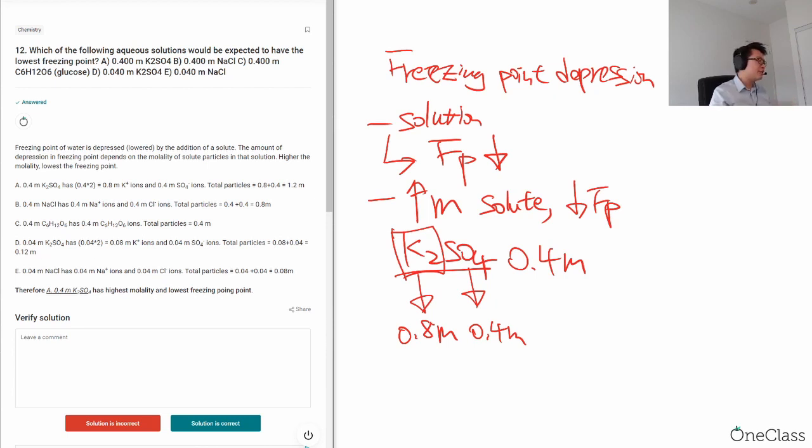We have 0.04 potassium sulfate giving 0.08 potassium and 0.04 sulfate, total 0.12 molality. Then 0.04 sodium chloride gives 0.04 sodium and 0.04 chloride, total 0.08 molality. From here the calculation is correct. However, when we're looking at C, we're looking at something called glucose.